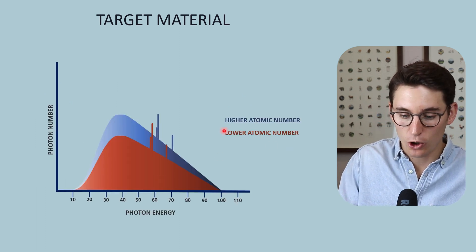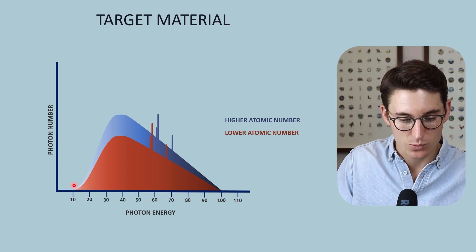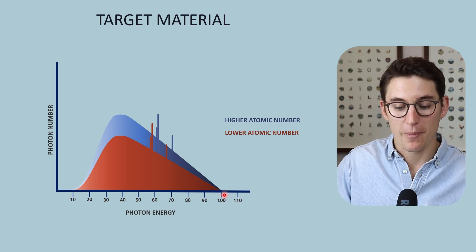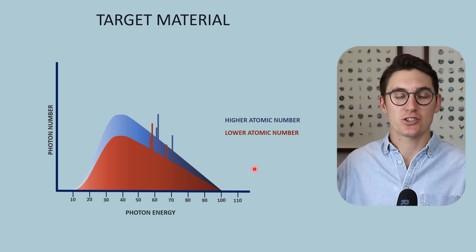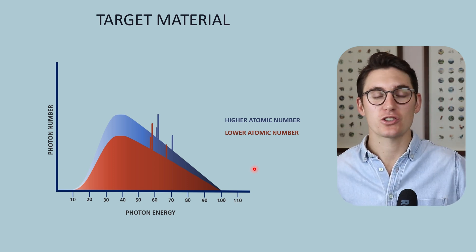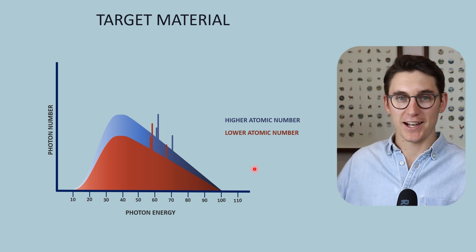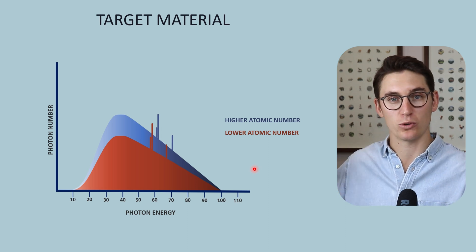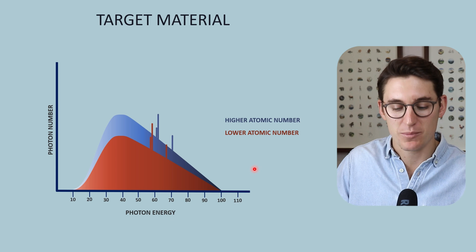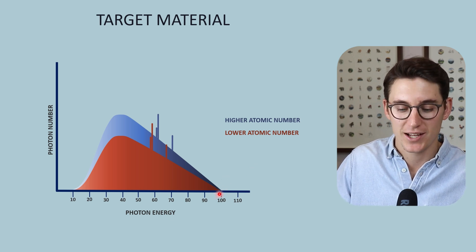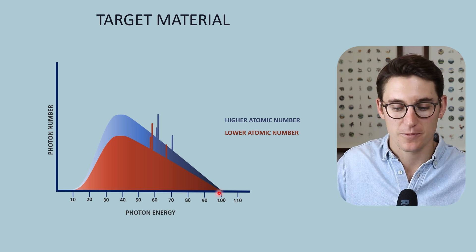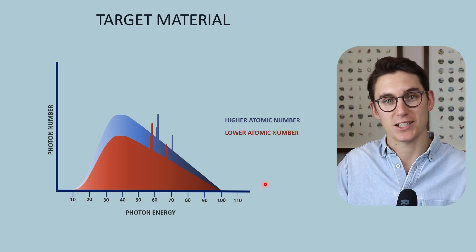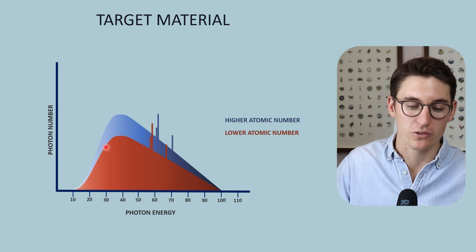A low atomic number target has fewer x-rays within the x-ray beam — it has reduced x-ray beam quantity. Our maximum photon energy has not changed, as that is determined by our tube potential. Regardless of what our anode target material is, when an electron accelerated at a specific tube potential collides with the nucleus it will lose all its kinetic energy and release Bremsstrahlung radiation equal to that energy — independent of the atomic number of our target. As we increase atomic number, we increase the number of x-rays exponentially.